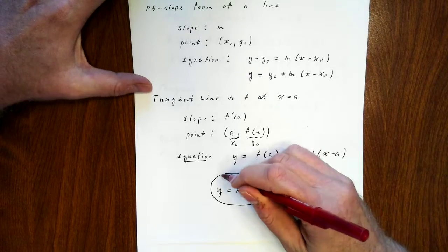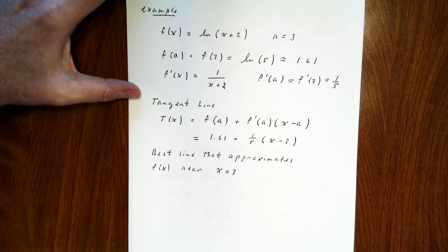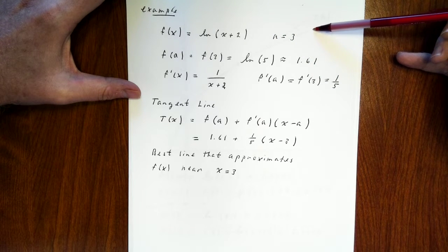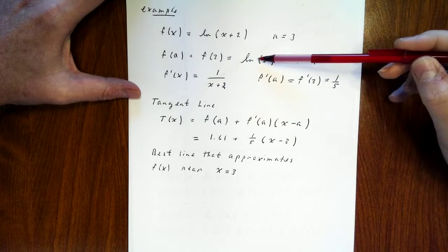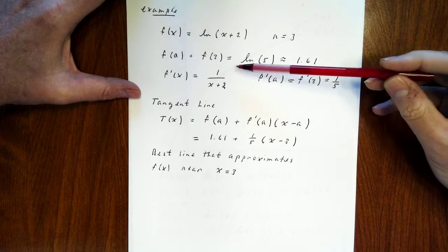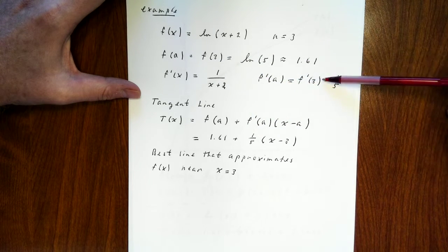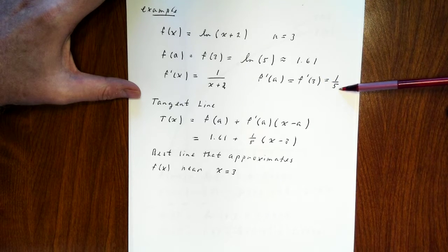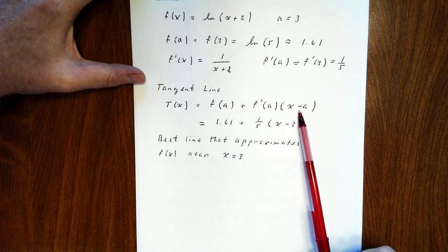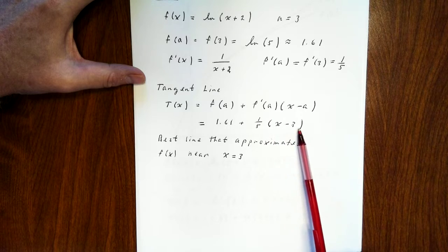In calculus 1, we try to wean students off of slope-intercept. Let's take a look at an example. Suppose we have the function f(x) equals the natural log of x plus 2, and we'll focus on a equals 3. Let's find the equation of the tangent line to f at 3. If we plug 3 into f, we get ln(5), which I'll approximate as 1.61. Taking the derivative of ln(x+2) gives 1 over x plus 2. Plugging 3 in gives 1/5. So the equation of the tangent line at x equals 3 is 1.61 plus 1/5 times x minus 3.